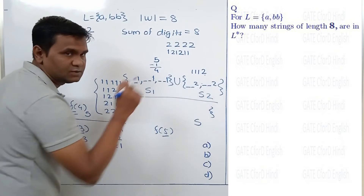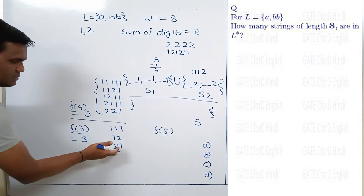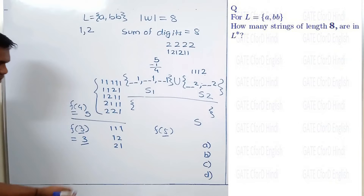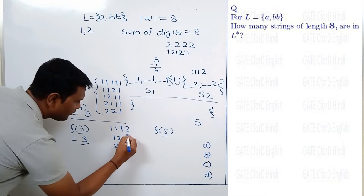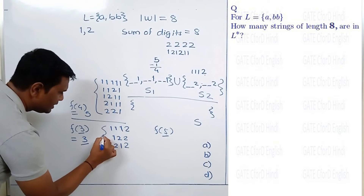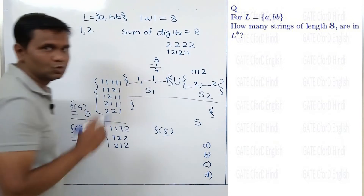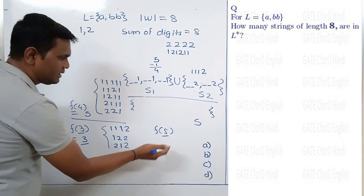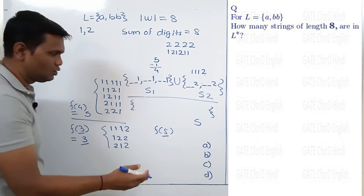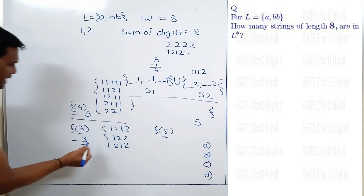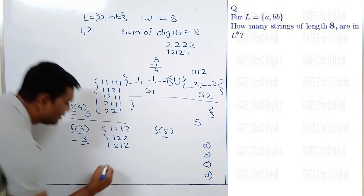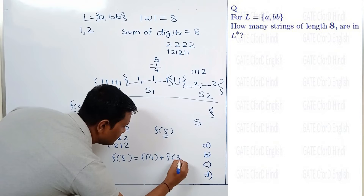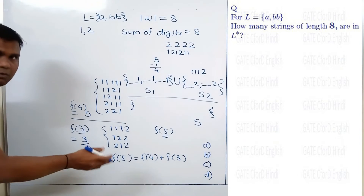Similarly, for S2, if we consider all numbers which contain only 1 and 2 and have a sum of digits equal to 3, and append 2 to each, we get set S2. For this reason, to find how many numbers have digits 1 and 2 with a sum equal to 5, we simply add f(4) + f(3). So f(5) = f(4) + f(3), and this is the Fibonacci function.